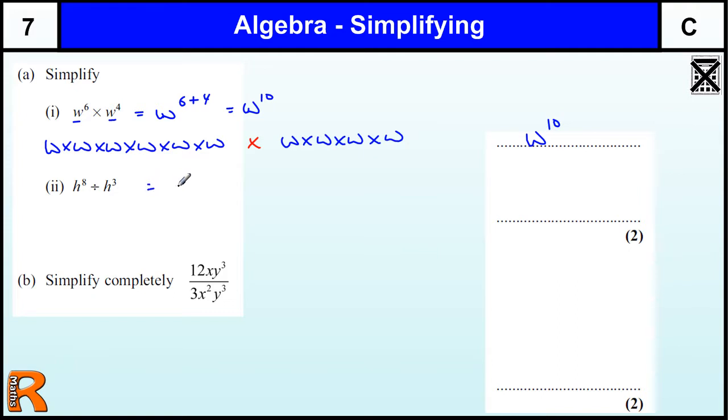Similarly with division, h^8. With division with the same base numbers, we just subtract the powers to get h^5.